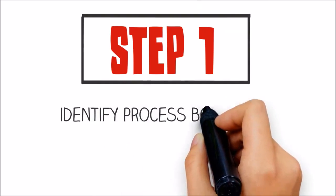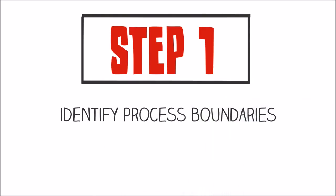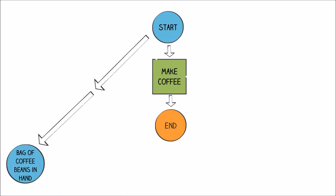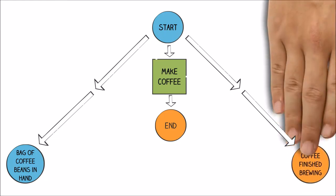Step 1: Identify the boundaries of your process, which can be found in your SIPOC. Using our example of making coffee, the process will start with having the bag of coffee beans in hand and will finish with the coffee brewed and ready to pour.